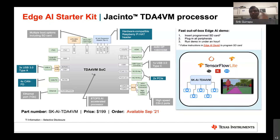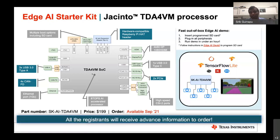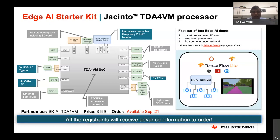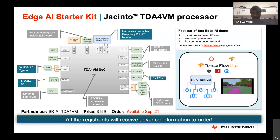You'll be able to run comprehensive out-of-the-box edge AI demos in under 30 minutes. The kit is priced at $199, and at this price point with up to 8 TOPS of edge performance, this is truly a game changer for developers. We expect very high demand for this EVM, so all webinar registrants will get a link to order sooner than the broad market — look for that email in the next two to four weeks.